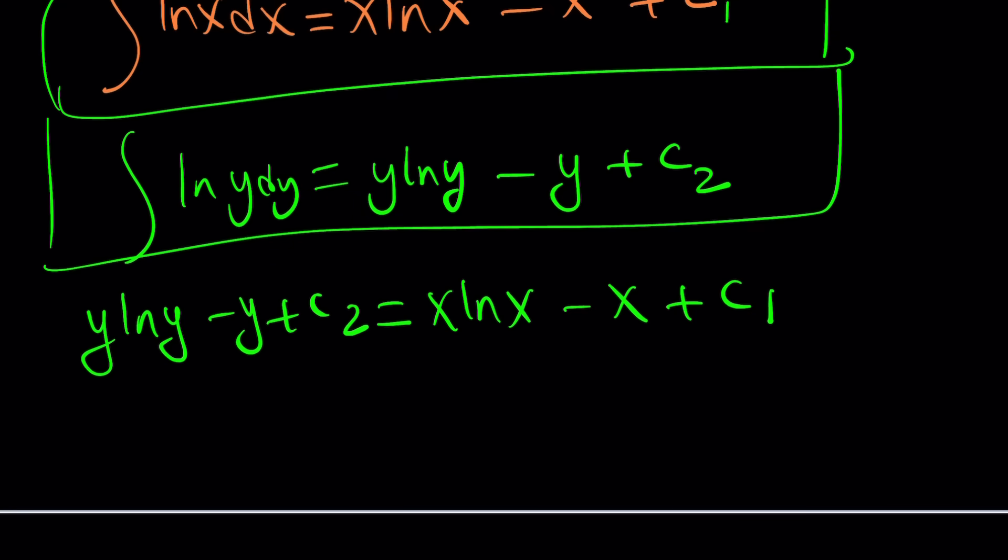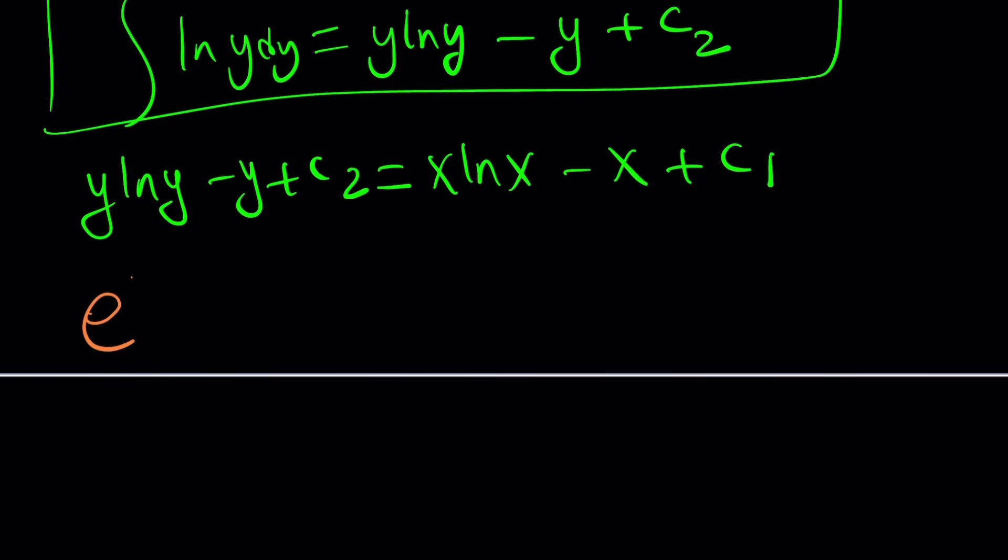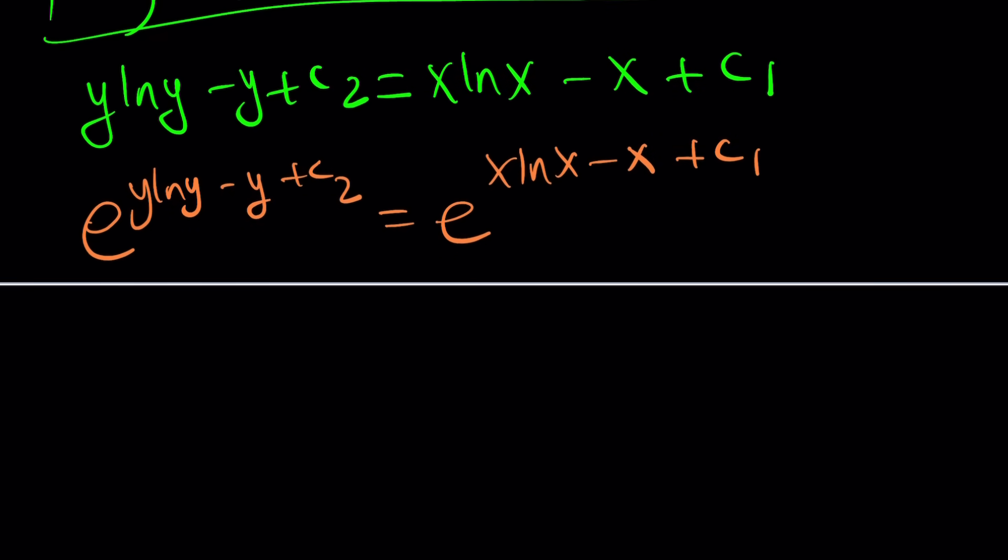You can do e to the power on both sides like this. e to the y ln y minus y plus c2 equals e to the x ln x. Because if two things are equal then e to the power those two things are also equal. e^(y ln y) is e^(ln y^y). But e^(ln y) is y. So this becomes y to the y. It's kind of problematic. I'm not sure if I want to proceed with that. But again,